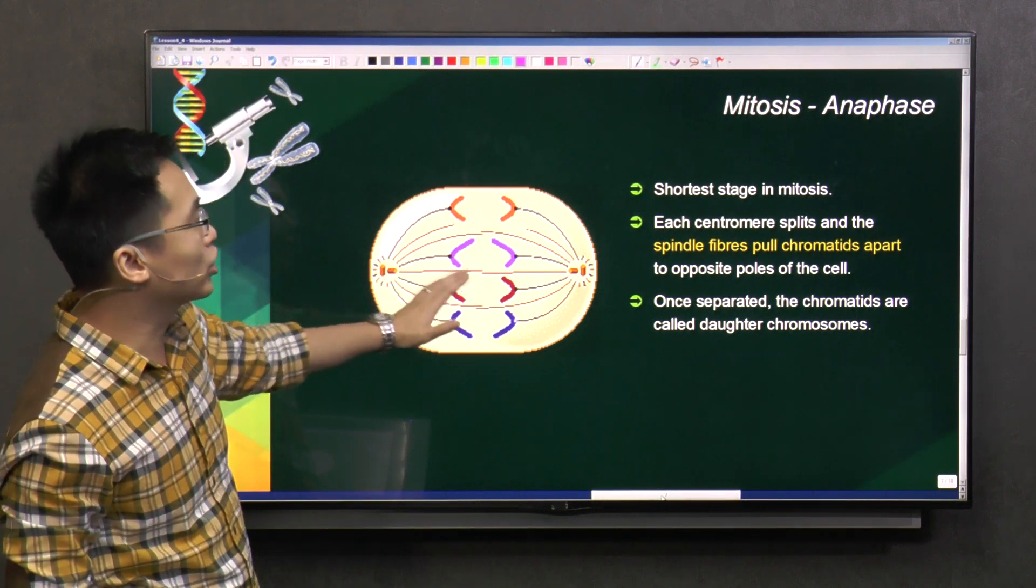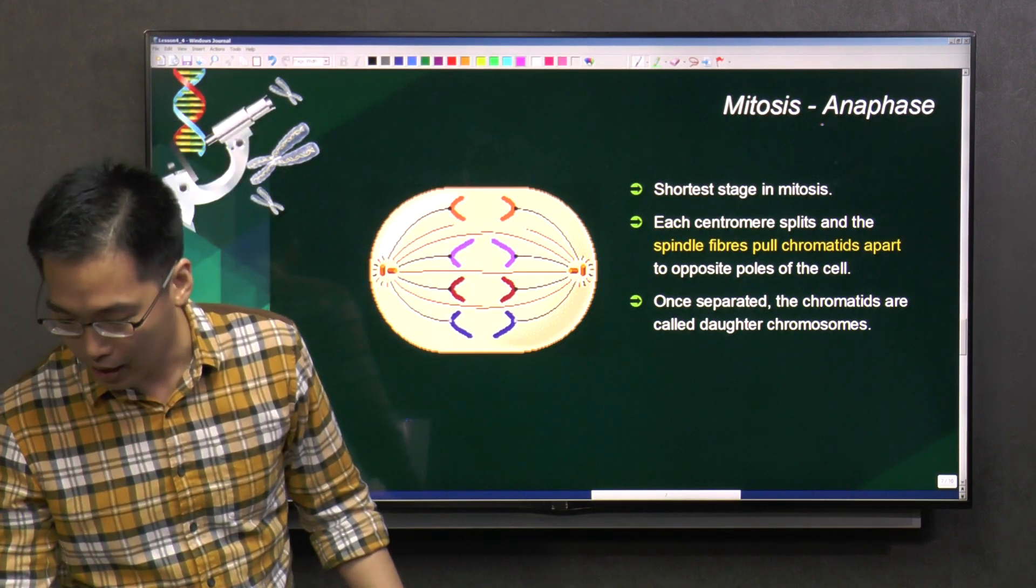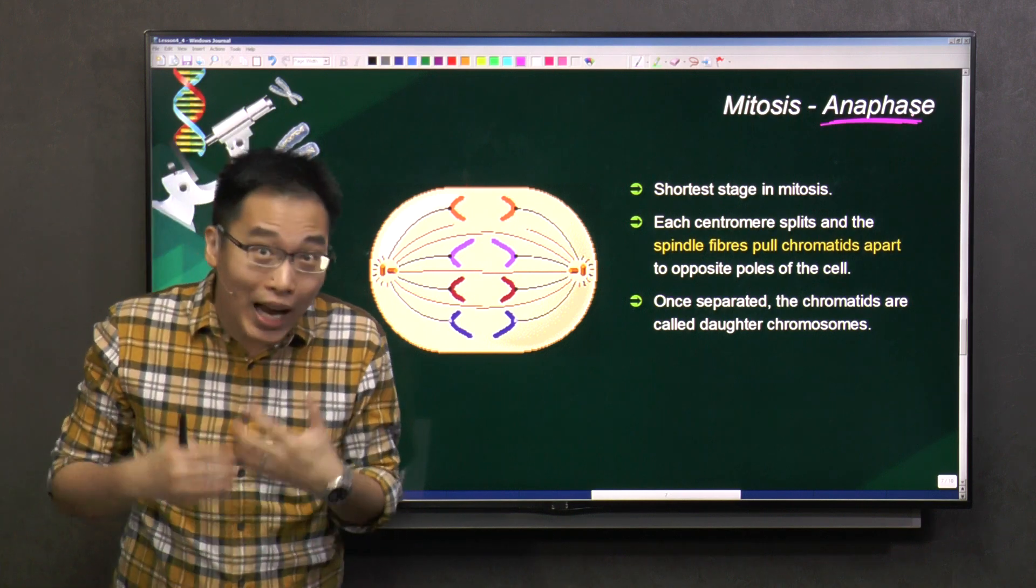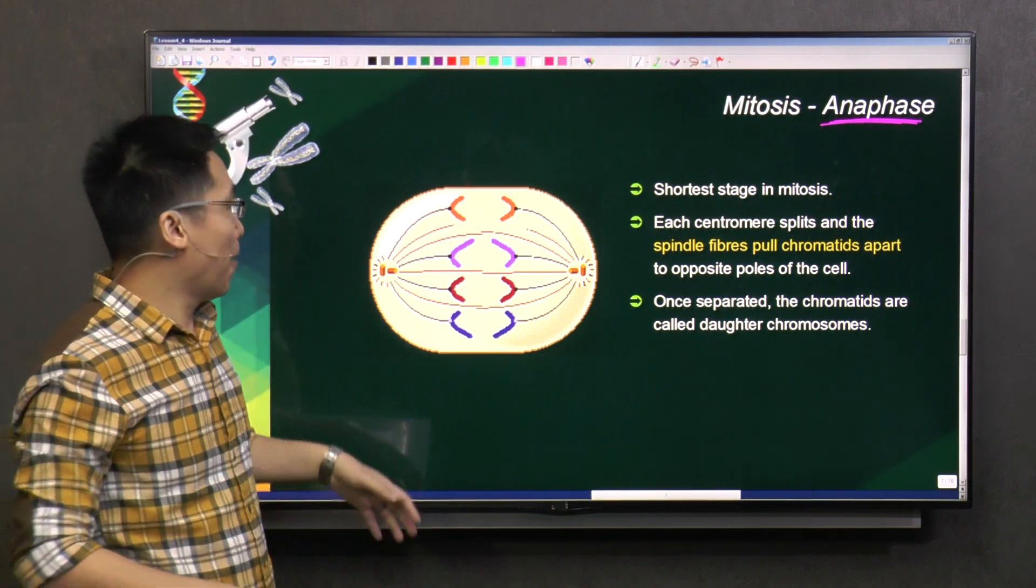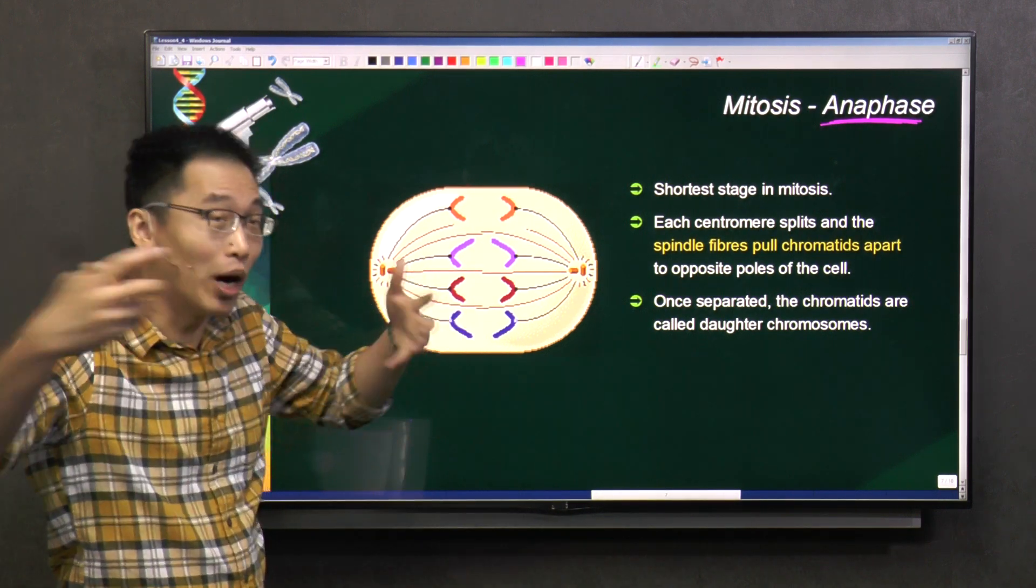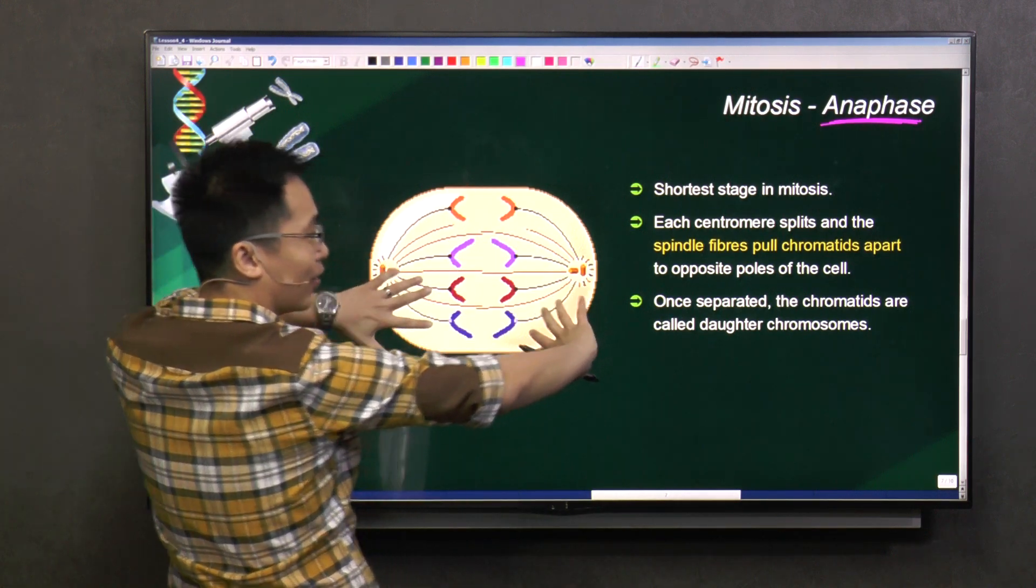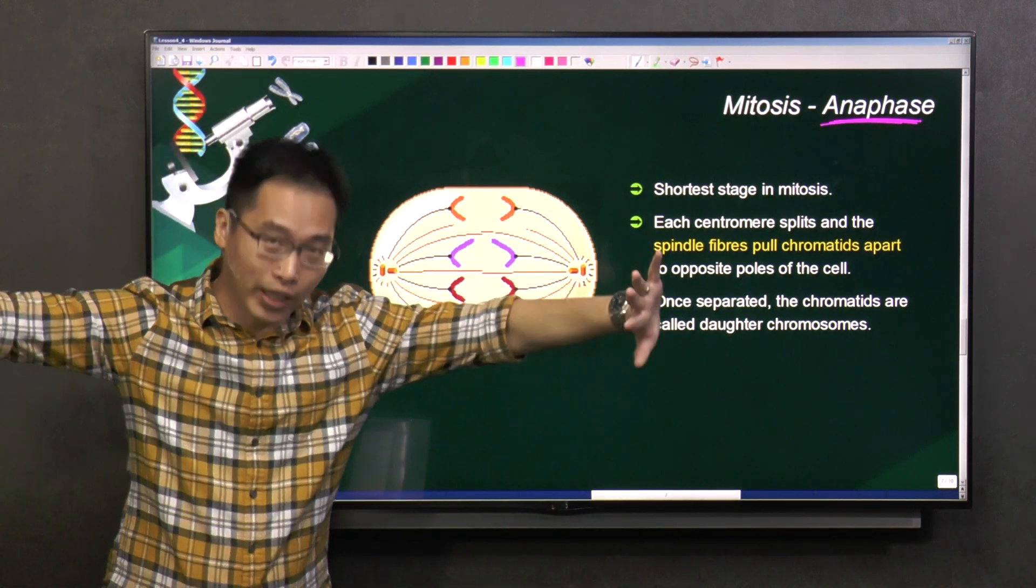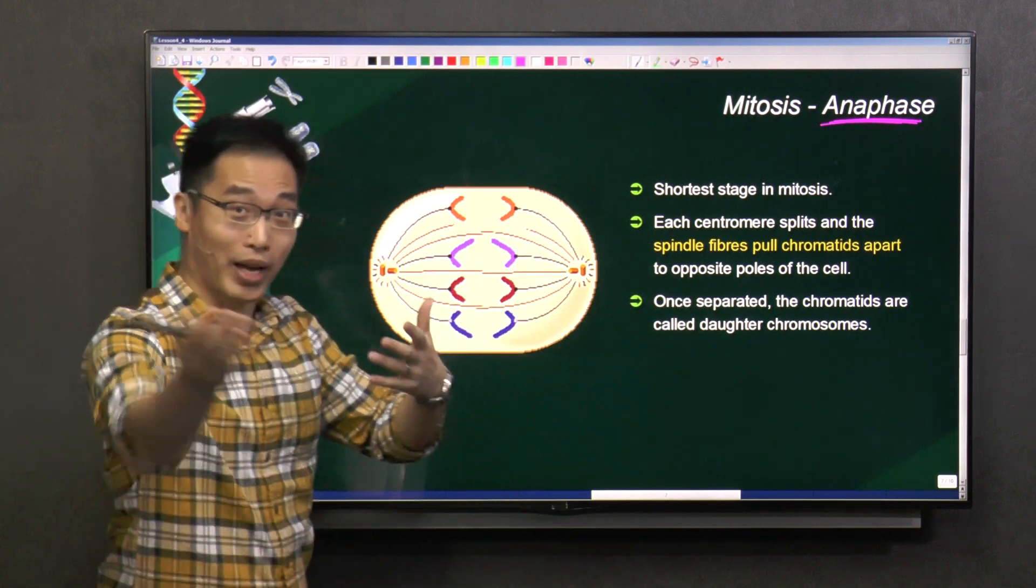This is the shortest phase. This phase is called anaphase. The way I remember anaphase is pulling away or apart. So you see all the chromosomes are being pulled apart. Anaphase away, that's how I remember it. I hope that helps you as well.